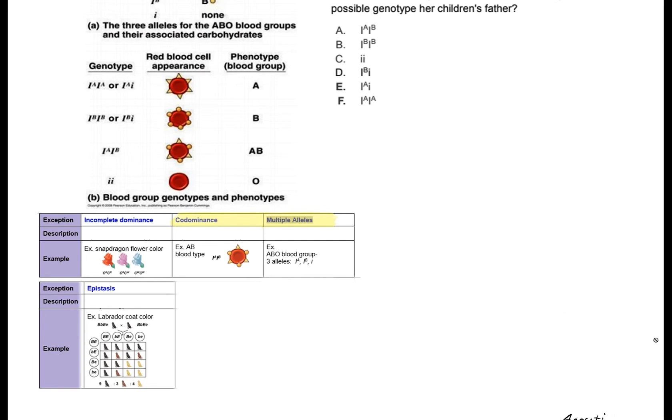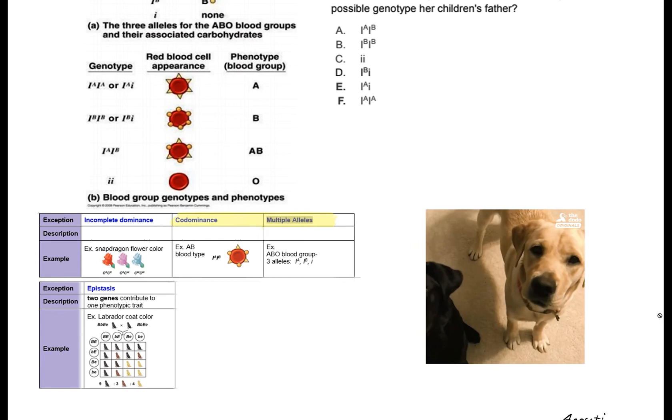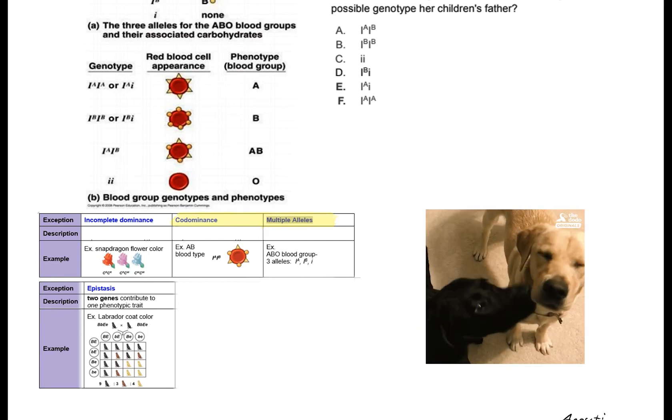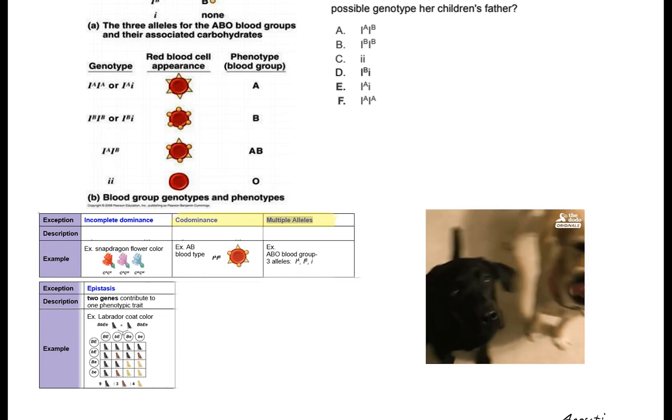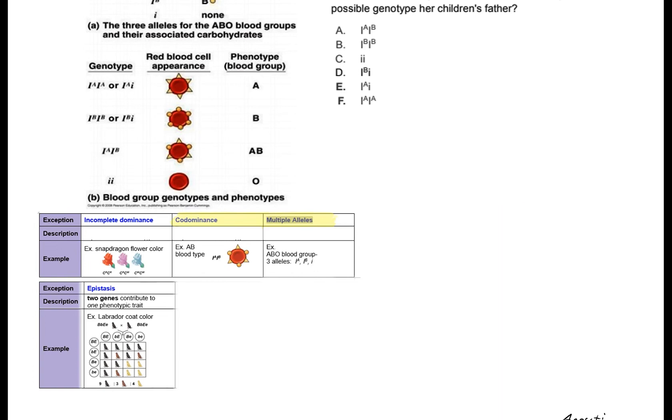So we already did some questions on epistasis where we see two genes contributing to one phenotypic trait. We saw that in the Labrador color problem where we have a separate gene controlling the pigment and that ultimately impacts the appearance of that pigment that is coded by a different gene.